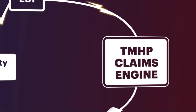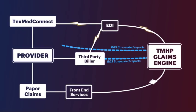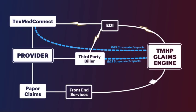The claims engine uses edits, audits, and rules to process claims. Once claims get into the claims engine, they are processed and produce a remittance and status, or R&S, report for the provider. The R&S reports are provided weekly to the provider via the delivery method they have selected. Regardless of the submission method, all R&S reports are available on TexMedConnect. It is the responsibility of the provider to review their R&S reports. Rejected claims will not show up on the R&S report, so it is important to contact EDI or your third-party biller.